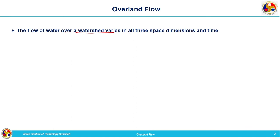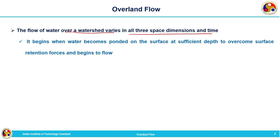The flow of water over a watershed varies in all three dimensions — it is a three-dimensional phenomenon. It begins when water becomes ponded on the surface at sufficient depth to overcome surface retention forces and then begins to flow. Whenever a storm occurs, certain storages must be satisfied; once satisfied, the remaining excess rainfall ponds on the surface. Once it reaches a certain depth it overcomes the retention forces and starts flowing on the surface of the earth — that is termed overland flow.